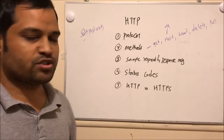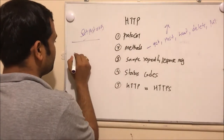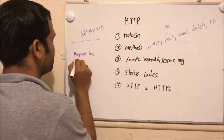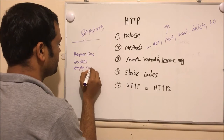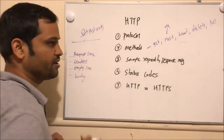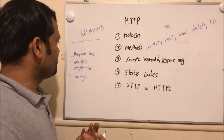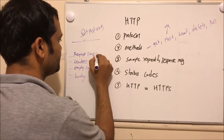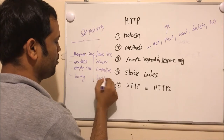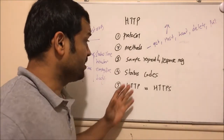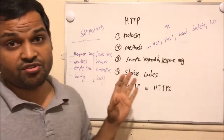Now let us see what the sample request and response messages look like. For the request message, there is a request line, followed by headers, then an empty line, followed by an optional body. When we get the response back from the server, instead of a request line there is a status line, then headers followed by an empty line, and then the actual body containing the response. In the next section, I will take you to the computer and show you how the actual request and response look in Chrome browser as well as Postman.